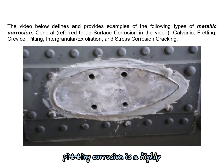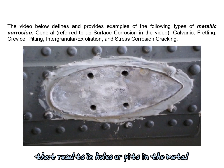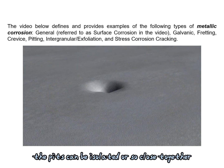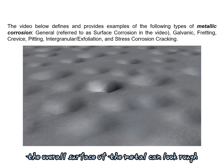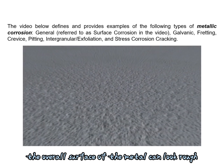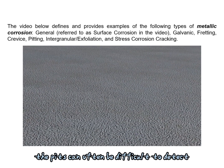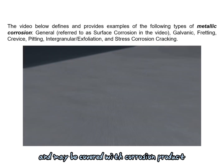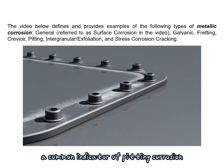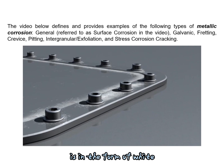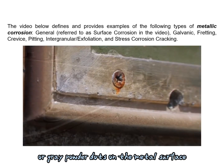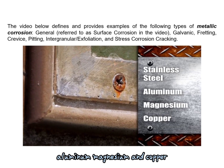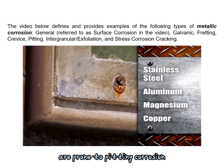Pitting corrosion is a highly localized form of corrosion that results in holes or pits in the metal. The pits can be isolated or so close together that the overall surface of the metal can look rough. Pits can often be difficult to detect because they can be very small and may be covered with corrosion product. A common indicator is white or gray powder dots on the metal surface. Stainless steel, aluminum, magnesium, and copper are prone to pitting corrosion.